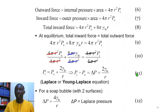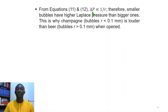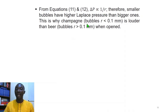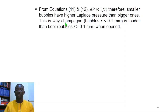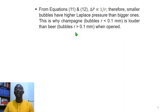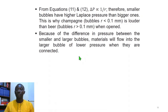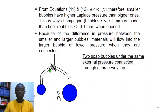From equations 11 and 12, the Laplace pressure is inversely proportional to the radius of the bubble — smaller bubbles have higher Laplace pressure than bigger ones. This explains why opening a bottle of champagne is louder than opening a bottle of beer: the bubbles in champagne have a radius less than 0.1 mm, while those in beer have a radius greater than 0.1 mm. Because of the pressure difference, materials will flow into the larger bubble of lower pressure when two bubbles are connected.